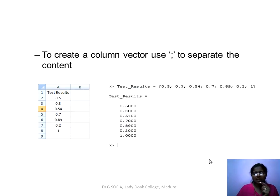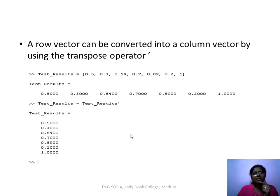To create a column vector, use semicolon to separate the values within square brackets. If you want a row vector use comma; for a column vector use semicolon. A row vector can be converted to a column vector, or vice versa, using the transpose operator — a single quote. Placing a single quote after the vector name will convert it.